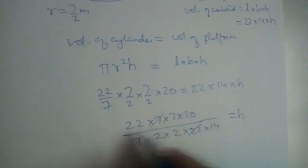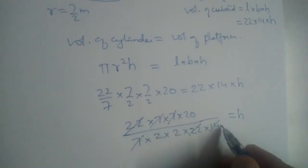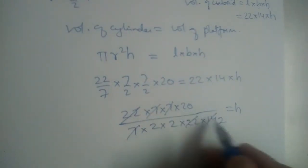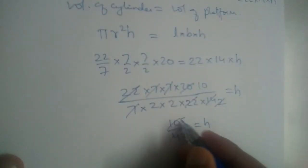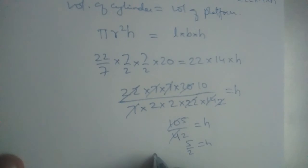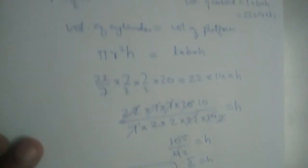This 22 and this 22 will get cancelled. This 7 and this is 2, this is 2. Now we have 10 divided by 4, or 2 into 2. 5 by 2 cancels to give us 5 by 2 which is 2.5. So height of the platform is equal to 2.5 meters.